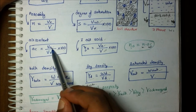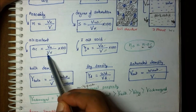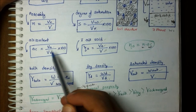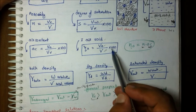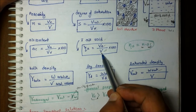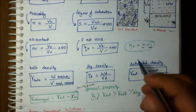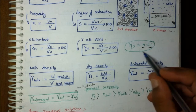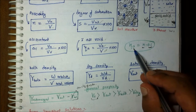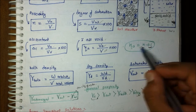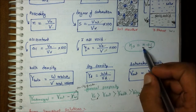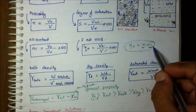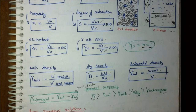Air content is defined as volume of air upon total volume. We also have the relationship: η_A equals N times A_C, where N denotes porosity and A_C denotes air content.